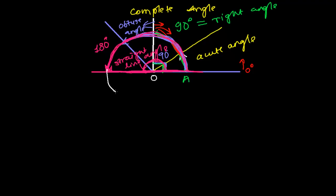Now suppose I'm moving even more than the straight line — I reach up to here, past 180 degrees. At that time, let me see how much angle I have made. I moved from here: I completed the acute angle, reached the right angle, crossed the obtuse angle, reached the straight line angle, and crossed even the straight line. I've now covered more than 180 degrees — it may be like 210 or 260 degrees.